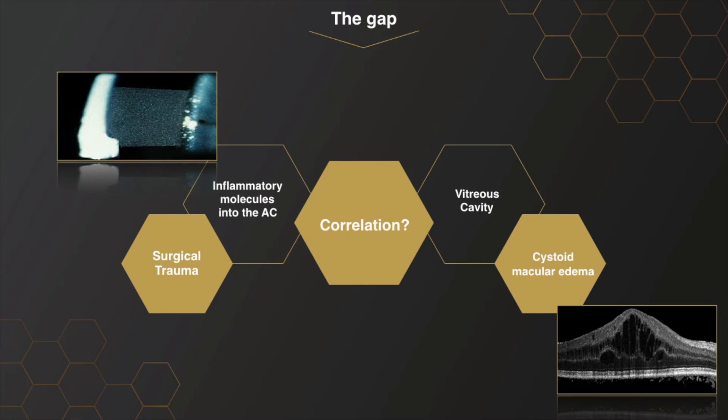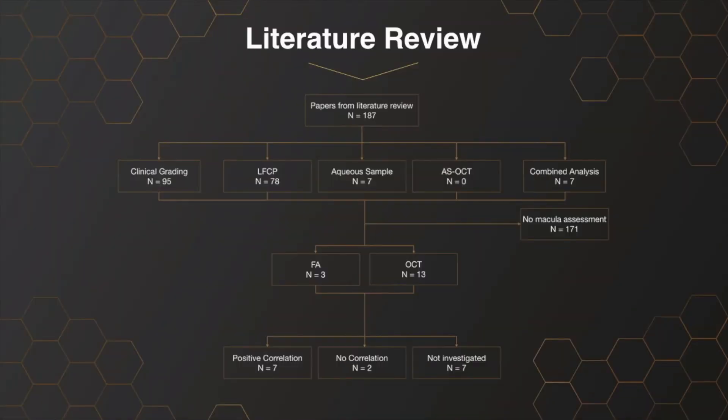Our review aims to identify evidence of correlation between quantitative analysis of anterior chamber inflammation and the risk of pseudophakic cystoid macular edema development. Methods of analysis of anterior chamber inflammation and the frequency of macular changes were recorded. In the majority of studies, inflammation was assessed by clinical grading, followed by laser fluorophotometry and aqueous sample analysis.